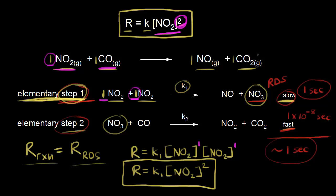Our overall reaction is second order in nitrogen dioxide and zero order in carbon monoxide. Notice that carbon monoxide doesn't appear until the second step, which is not the rate determining step — that's why the reaction is zero order in CO. Also note that K sub one for the rate determining step should be equal to K, the rate constant for the overall reaction.